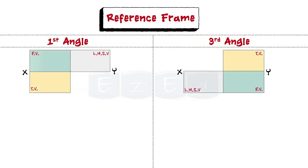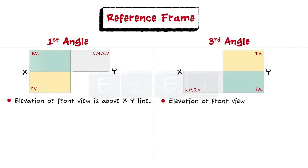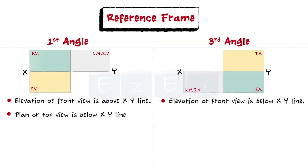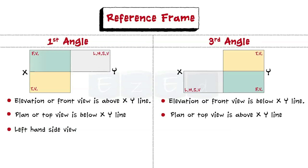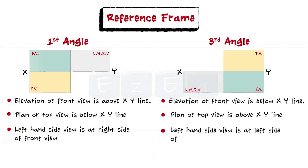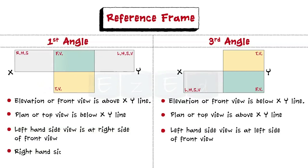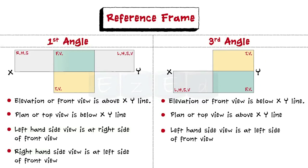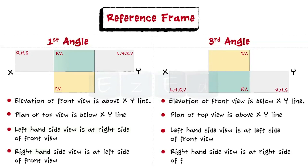Now, let us understand the difference between the first angle method of projection and the third angle method of projection. In first angle, elevation or front view is above the XY line, whereas in third angle it is below the XY line. Plan or top view is below the XY line, whereas in third angle it is above the XY line. Left-hand side view is at the right side of the front view, whereas in third angle it is at the left side of the front view. Right-hand side view is at the left side of the front view, whereas in third angle it is at the right side of the front view.